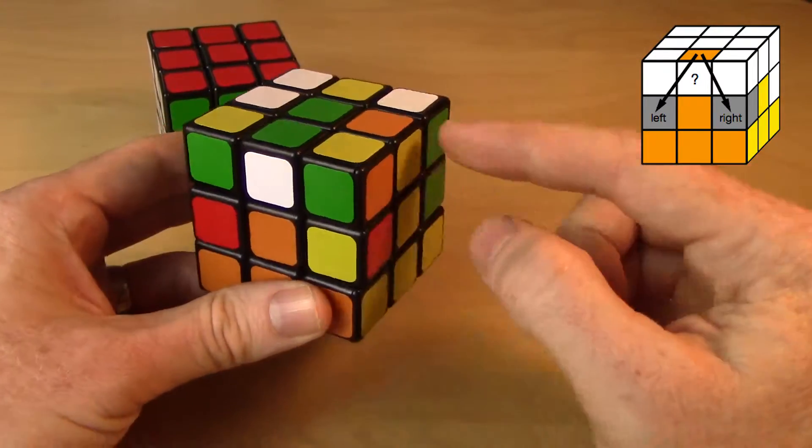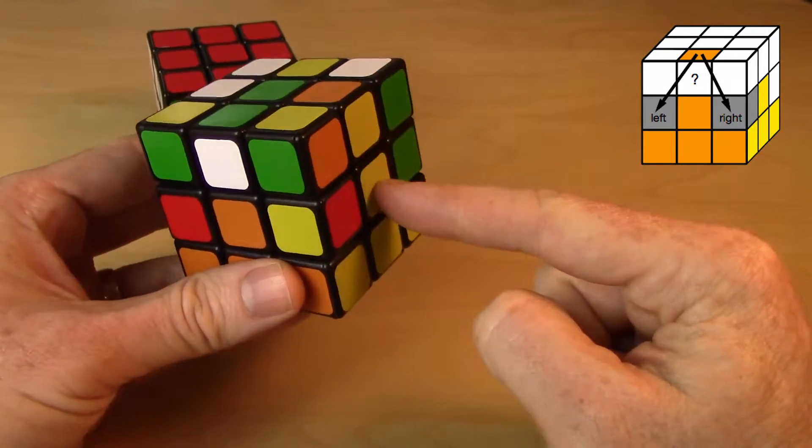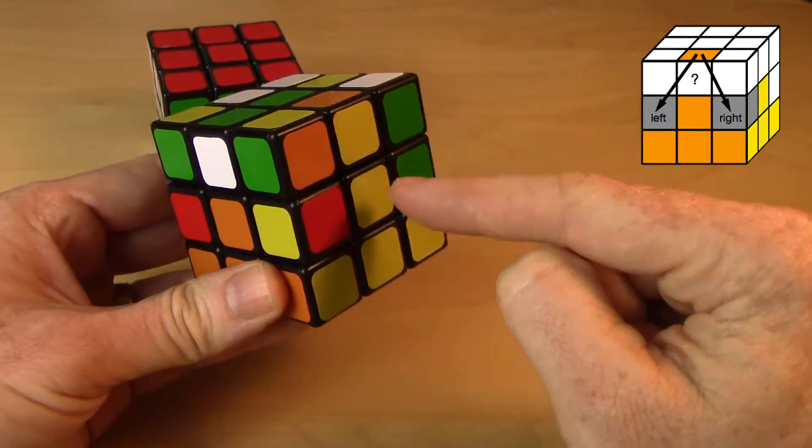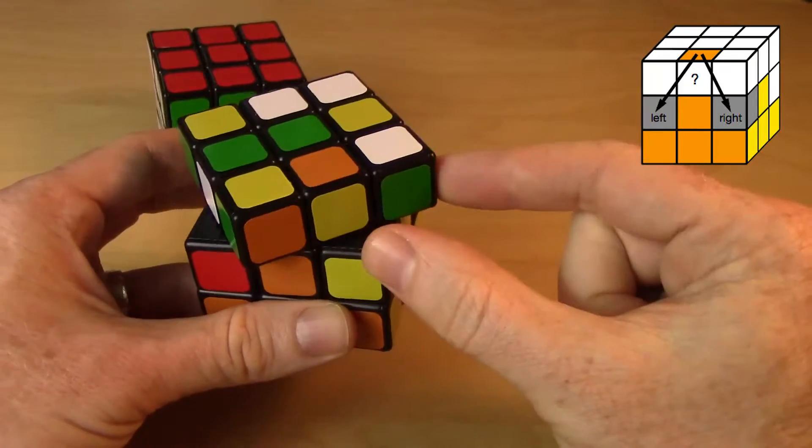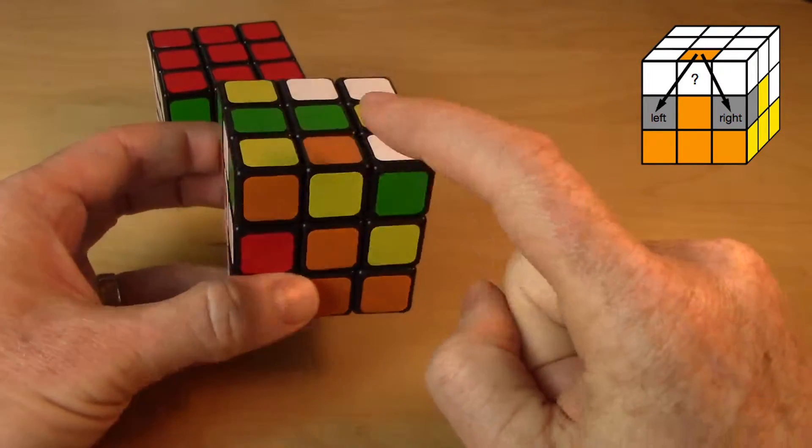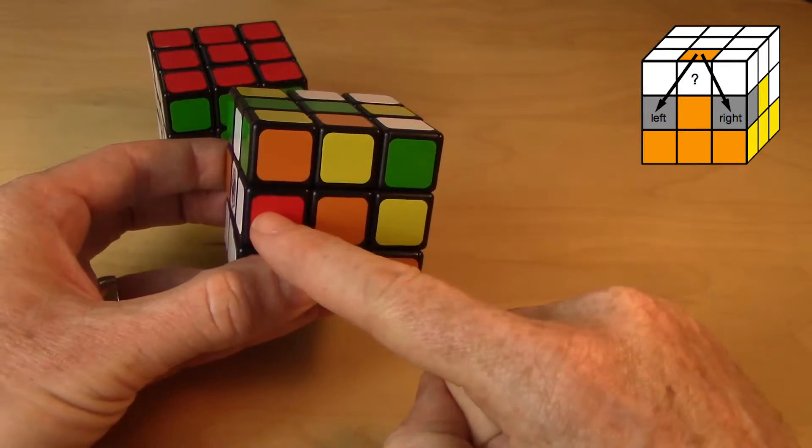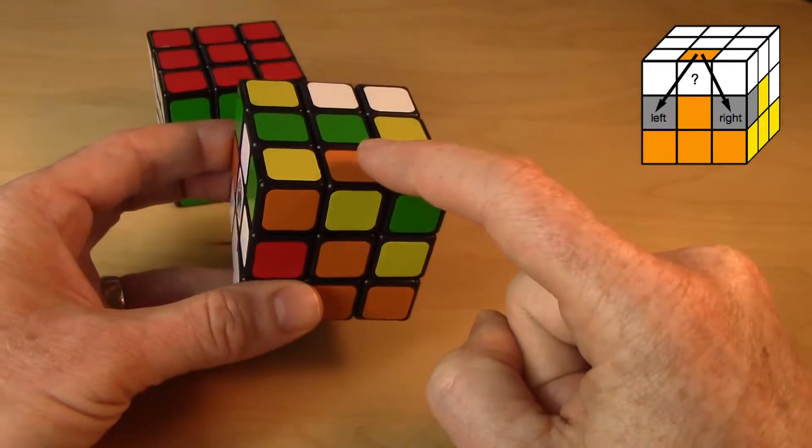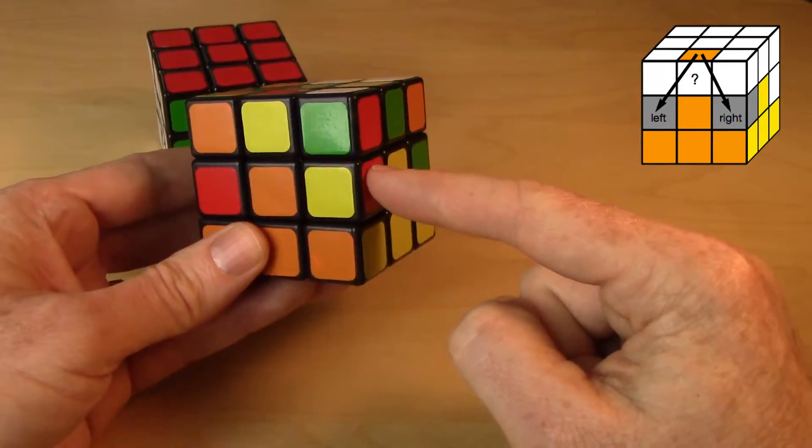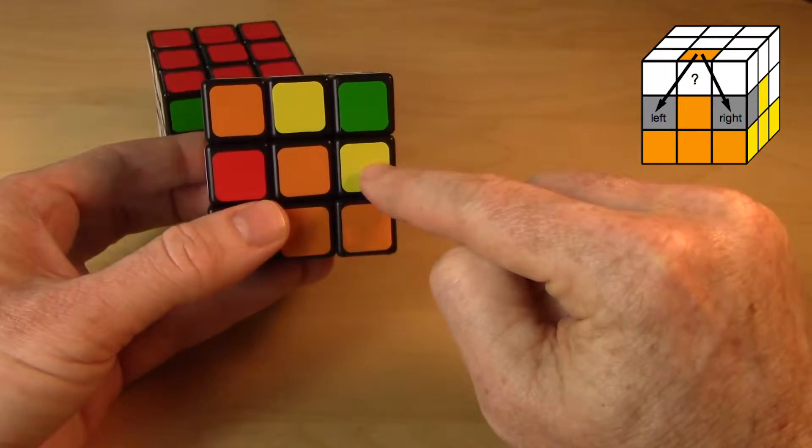So I look at the piece that I need to place, and instead of lining it up with the color on the side matching the color on the center, I do the opposite. I match the color on the top up with the color on the side, and then I decide, do I need to send it here or here? This is the orange-yellow. It needs to go over here, so it ultimately needs to go there.